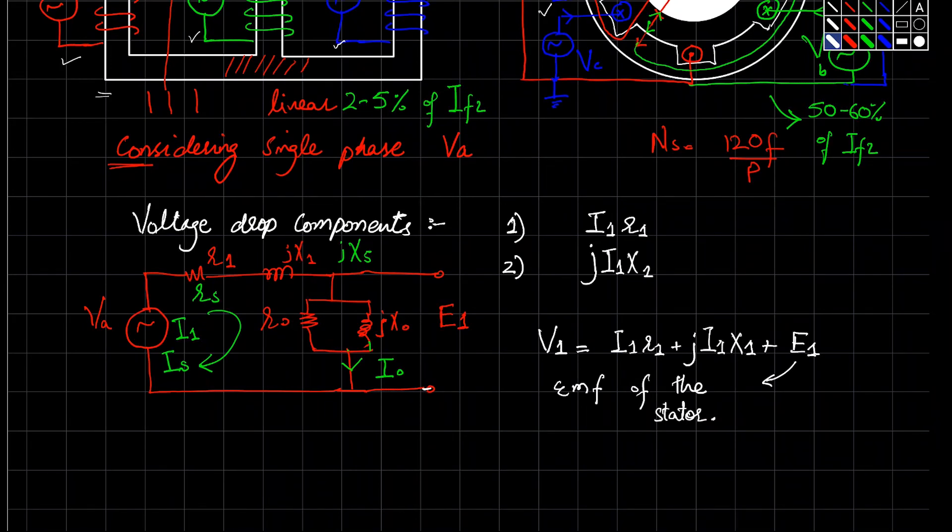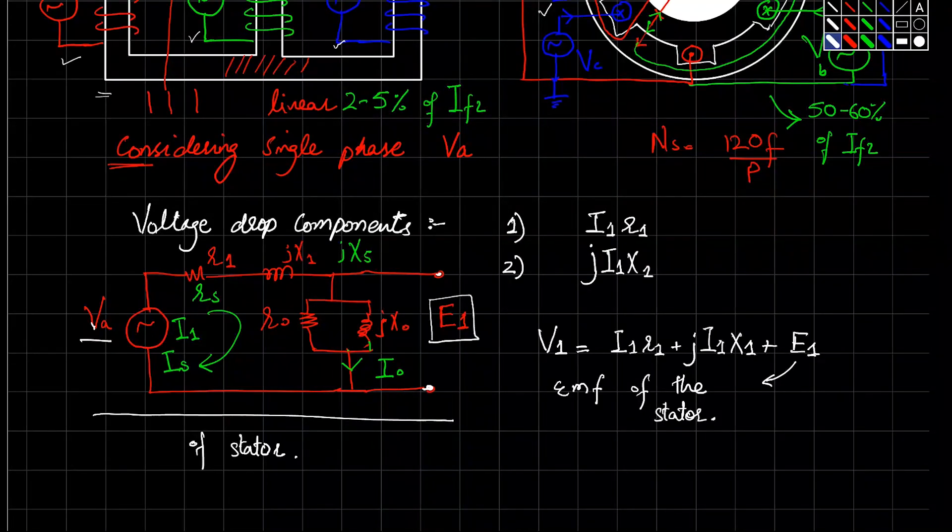So far we have the equivalent diagram of the stator. These are all stator side quantities: Va is the input voltage to the stator, I1 is the stator current sometimes called Is, and E1 is the EMF produced in the stator. In the next lecture we will see the rotor quantities and complete our equivalent circuit diagram. Thank you very much.